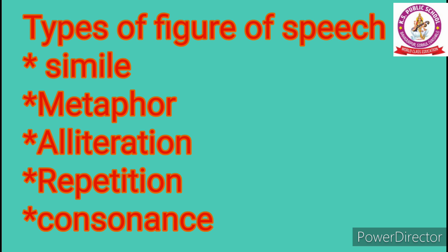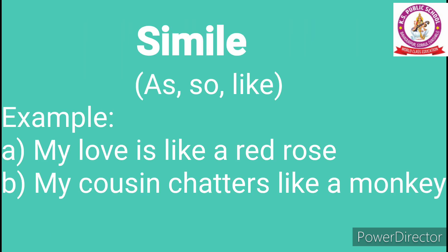To understand figures of speech, let us consider different types. First of all, simile. It is very easy to recognize a simile — if 'as' or 'like' is seen in a sentence, then it is called a simile. 'My love is like a red rose' is an example of a simile, because of the word 'like' in this sentence, it will be called a simile.